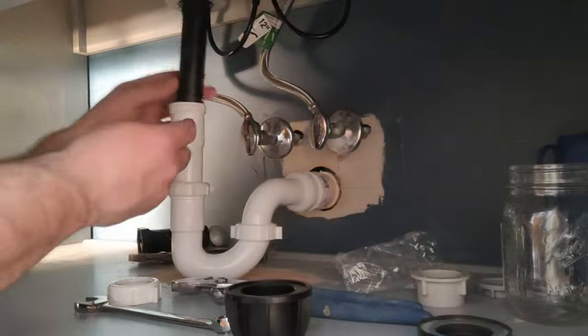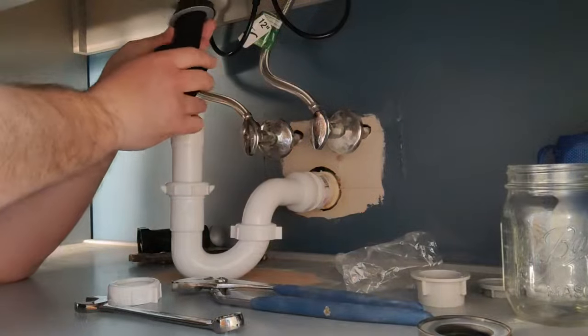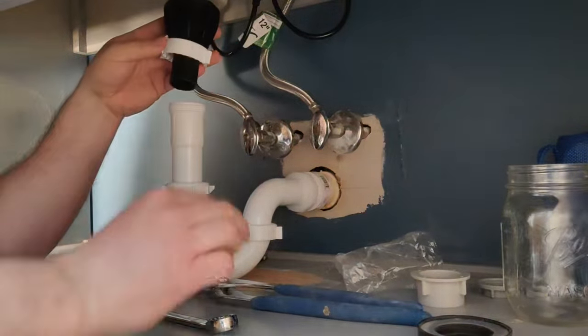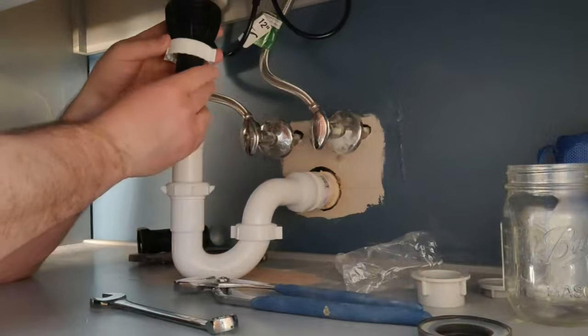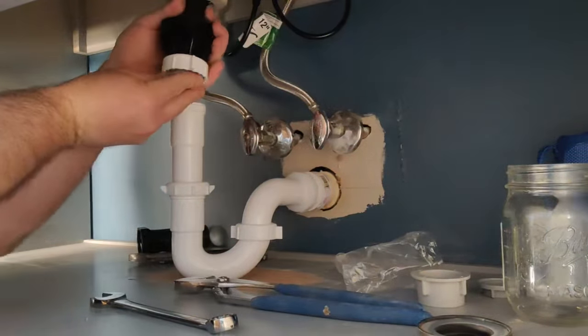Once the drain assembly is in place we're going to go back under the sink, tighten it down, and connect it with the p-trap. As you see I already have the p-trap installed. At the end there will be a link to my video on how to install a p-trap or you can check the description below.